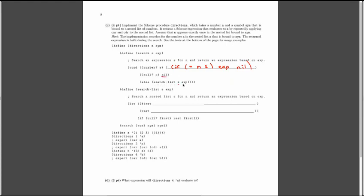Otherwise, we call `search-list s expression`. So `search-list` takes s and expression and searches the nested list for n, returning an expression based on exp. It seems that exp is actually going to be the list of directions accumulated so far.